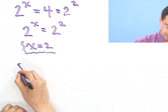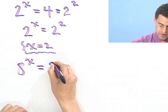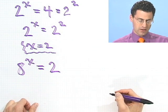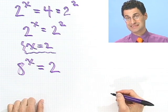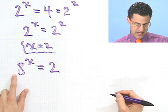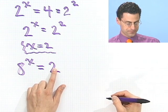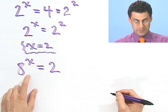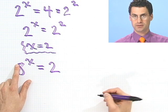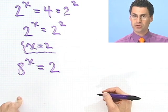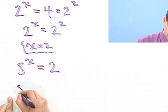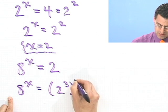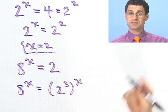For example, how about this one? 8 to the x equals 2. Well, let's see. What could I do here? Well, ideally I'd like to make these bases the same. Well, that's just a 2. This is an 8. Can I make an 8 look like a 2? Well, let's think about that for a second and see. Yeah, I guess I could, because 8 is just 2 cubed. 2 cubed is 8. 2 times 2 times 2 is 8. So in fact, I could write 8 to the x as 2 cubed to the x.